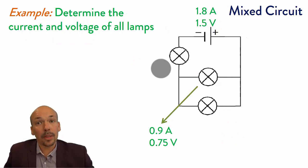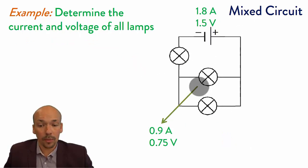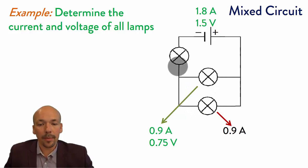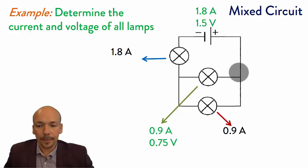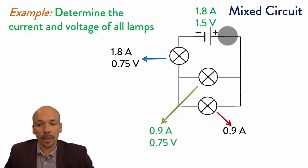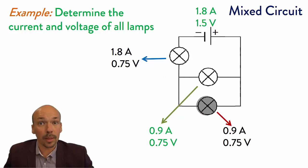Another mixed circuit example. Try to determine the current and voltage of all the lamps yourself, then I'll give the answer. We have 1.8 amperes out of the power source, then 0.9 go one way and 0.9 go the other way. Together they return and go through the last lamp, so it has 1.8 amperes. For voltage, looking at this loop: the loop must total 1.5 volts. They already lost 0.75 volts, so the last lamp uses the other 0.75. The same applies to the other loop — it also needs to total 1.5 volts, so that lamp also uses 0.75 volts.